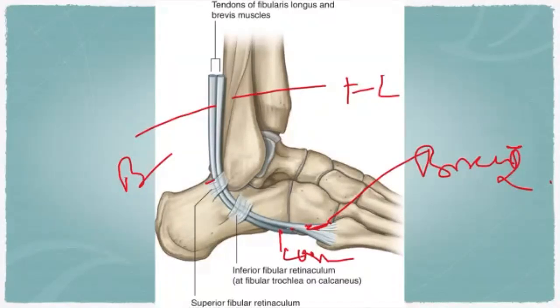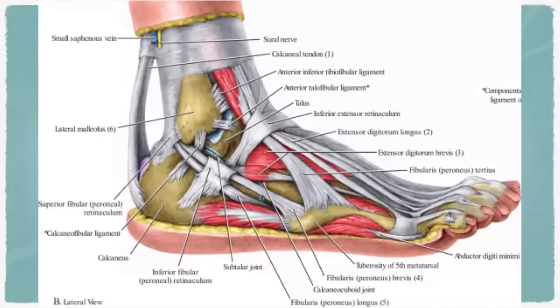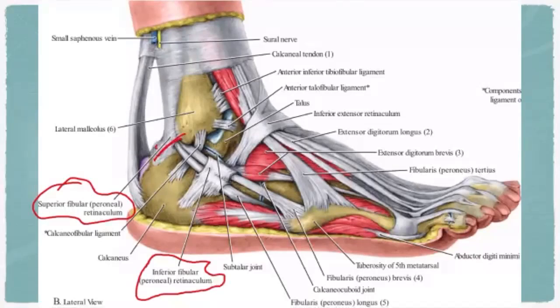The inferior fibular retinaculum is continuous in front with the inferior extensor retinaculum. It is attached posteriorly to the lateral surface of the calcaneus, and in some cases is fused with the periosteum of the fibular trochlea (peroneal trochlea), forming a septum between the tendons of fibularis longus and brevis. Both the superior and inferior fibular retinacula can be identified in the specimen covering the fibularis longus and brevis tendons.